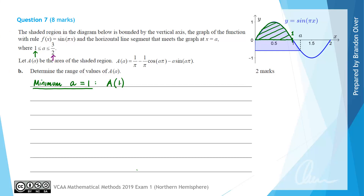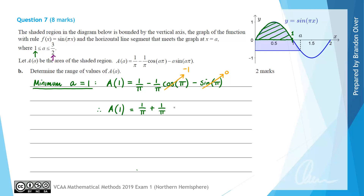To find the minimum, we substitute a = 1 into A(a): A(1) = 1/π − (1/π)cos(π) − 1·sin(π). Since cos(π) = −1 and sin(π) = 0, this gives 1/π − (1/π)(−1) − 0 = 1/π + 1/π = 2/π.